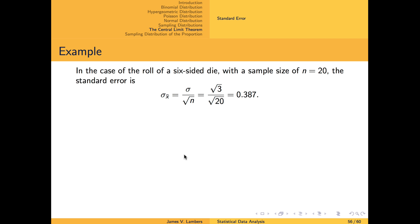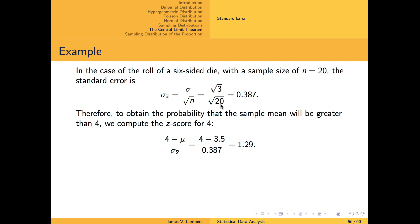To illustrate how to compute the probability of a sample mean falling within a given interval, we return to our example of a six-sided die. If we use a sample size of n equals 20, then by the central limit theorem, the sampling distribution of the mean behaves like a normal distribution with mean 3.5 and standard deviation given by the standard error of the mean, which is sigma equals the square root of 3 over the square root of n equals 20. So if we want the probability that the sample mean will be greater than 4, we can compute the z-score for 4 by shifting 4 by the mean and then scaling by 1 over the standard error of the mean, which gives us a z-score of 1.29.